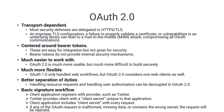OAuth 2.0 is centered around bearer tokens. These are easy for integration but not great for security — bearer tokens do not provide an internal security mechanism. OAuth 2.0 is much easier to work with and more useful, but it is more difficult to build securely and does not provide as strong security as OAuth 1.0.